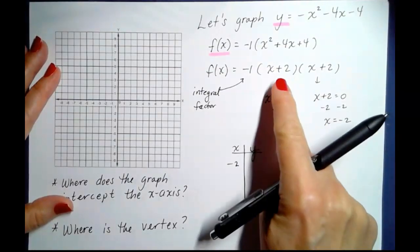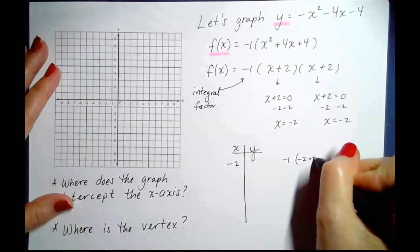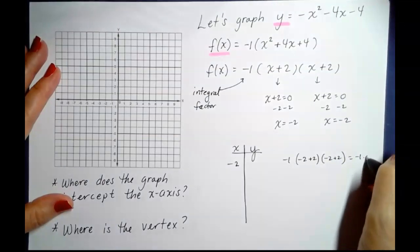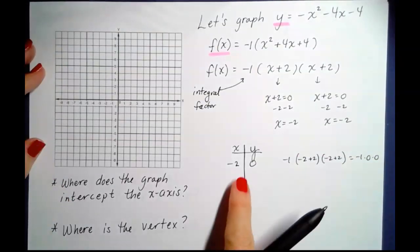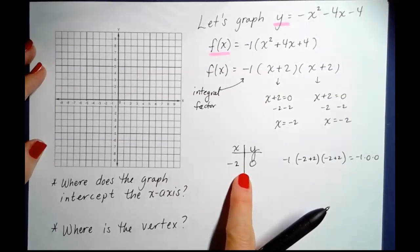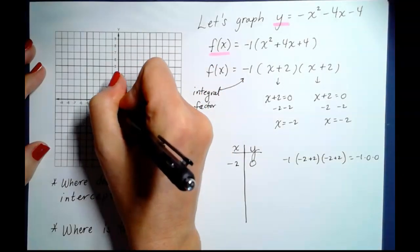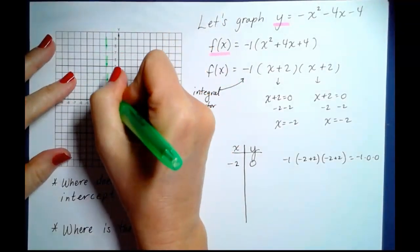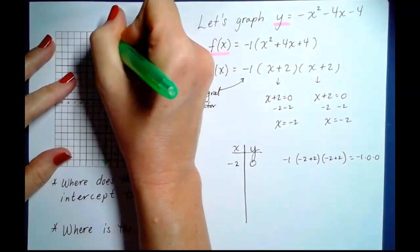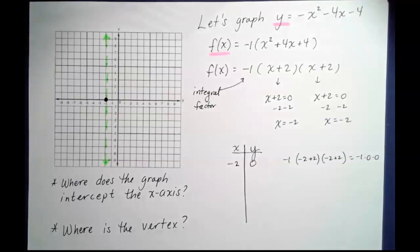Plugging negative 2 into the factored form: −1(−2+2)(−2+2) = −1(0)(0) = 0. There's no need to do that twice — this confirms the vertex is at (−2, 0). Since I only have one zero, I'll need to generate more values on my own. The axis of symmetry runs through that x-intercept, which is also the vertex in this situation.